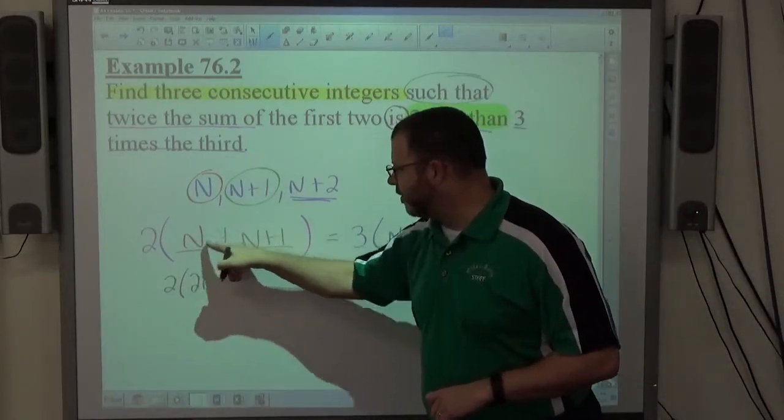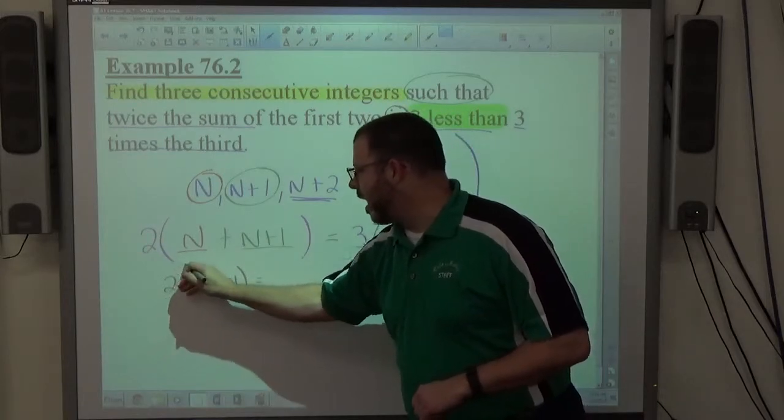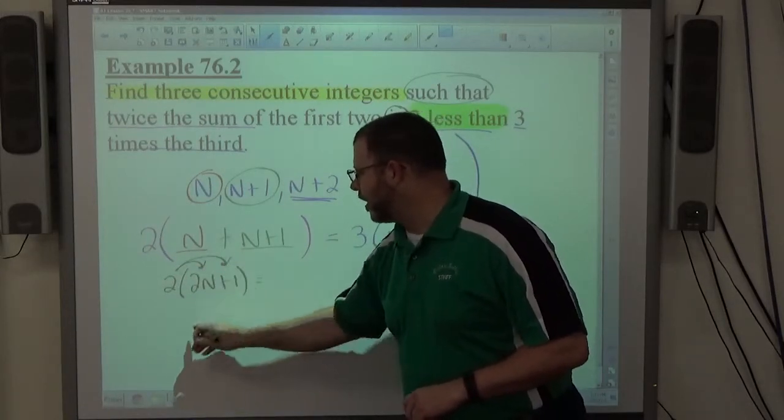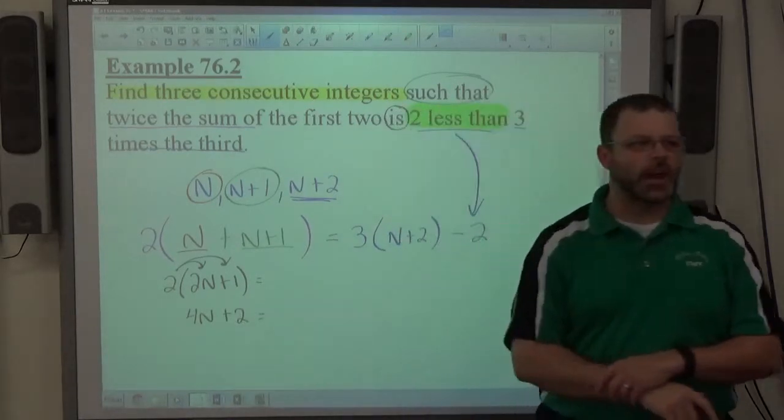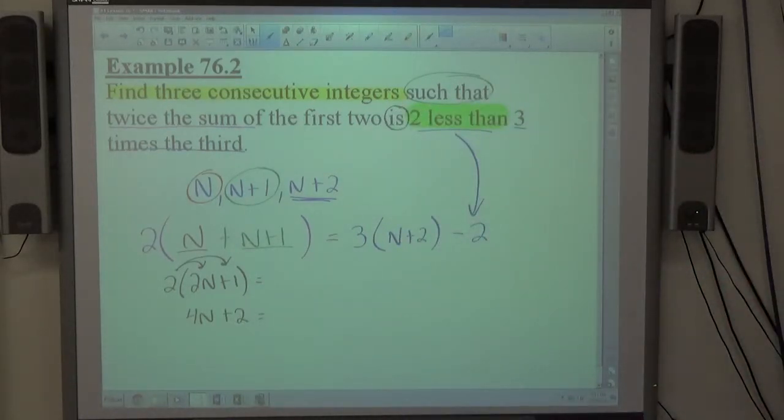If I did add these together first, n plus n is two n. Now I distribute. Two times two n is four n. Two times one is two. The left-hand side, four n plus two is the simplest I can get that to be.